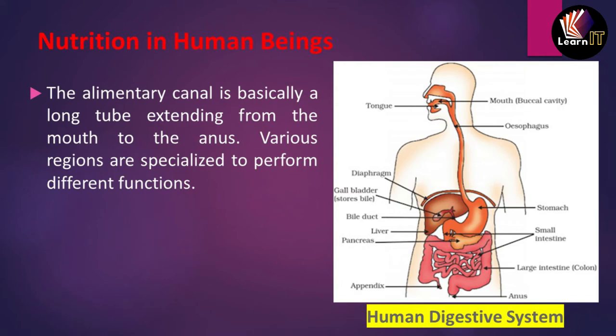Now let us discuss nutrition in human beings. The first thing is the alimentary canal — a long tube which extends from the mouth to the anus, performing various functions at different levels. Looking at the diagram, the important parts include the tongue, the mouth or buccal cavity where food is taken in and masticated, and the esophagus — a long tube that sends food from the mouth toward the stomach.